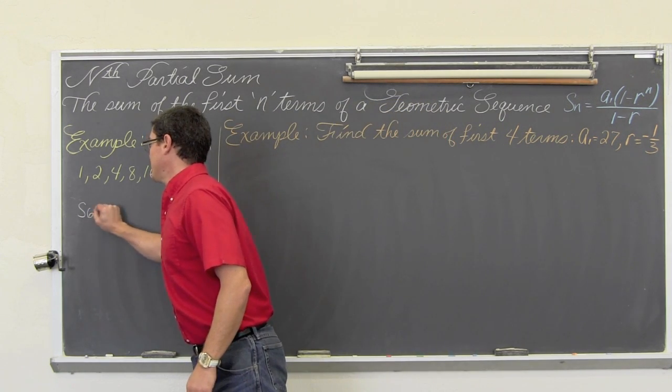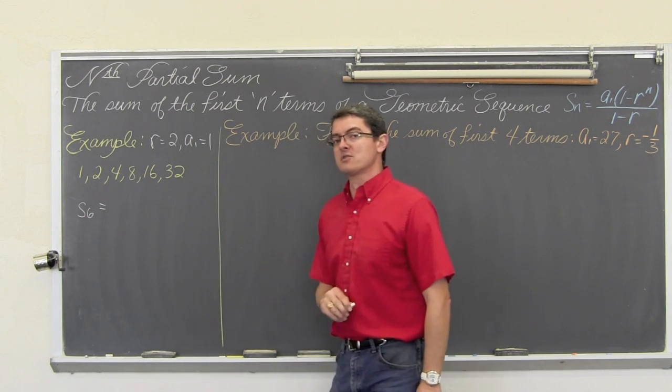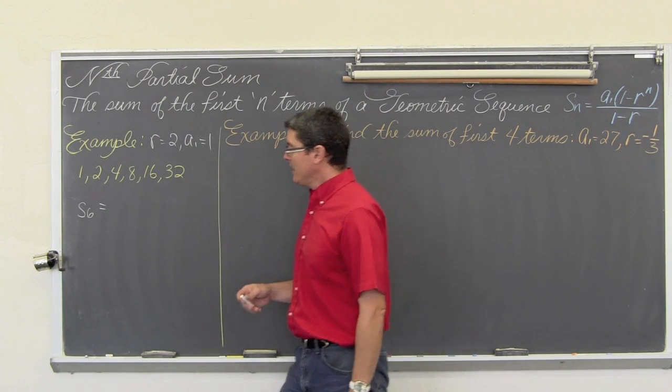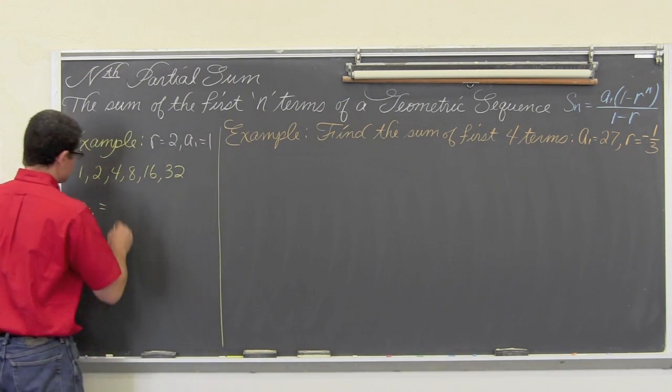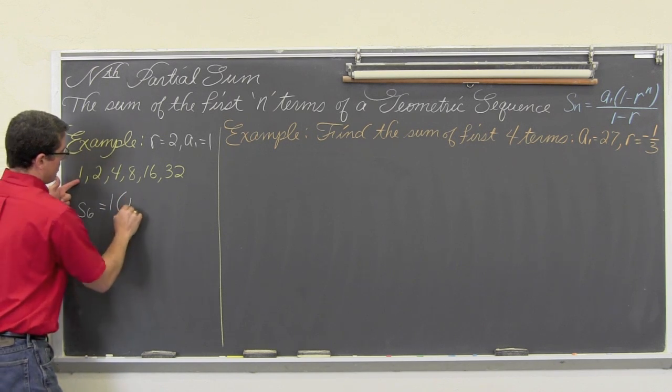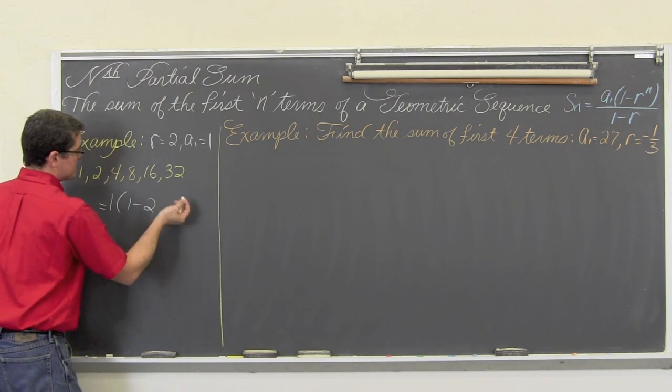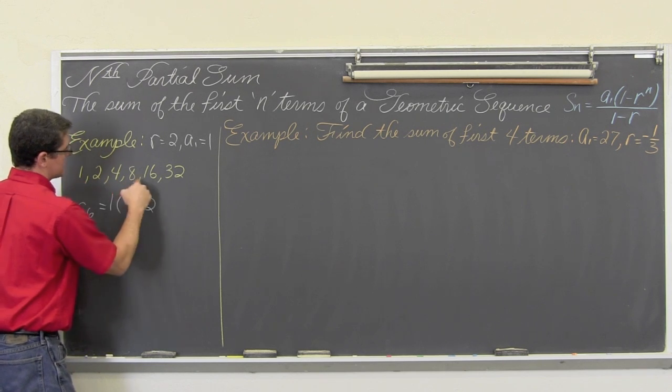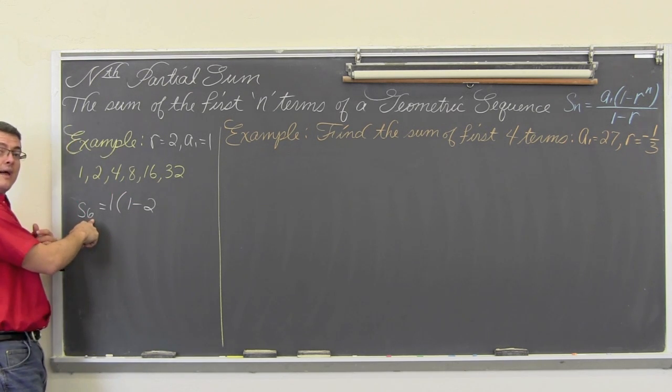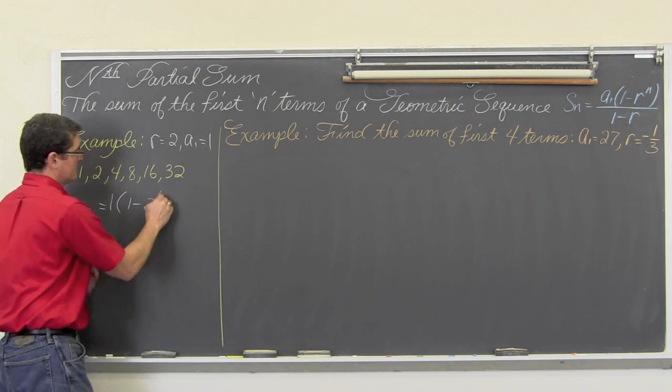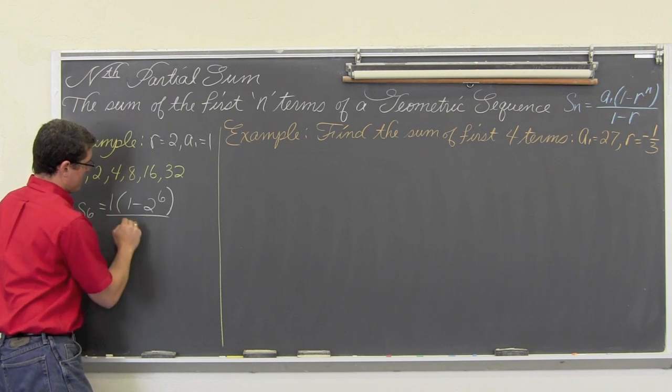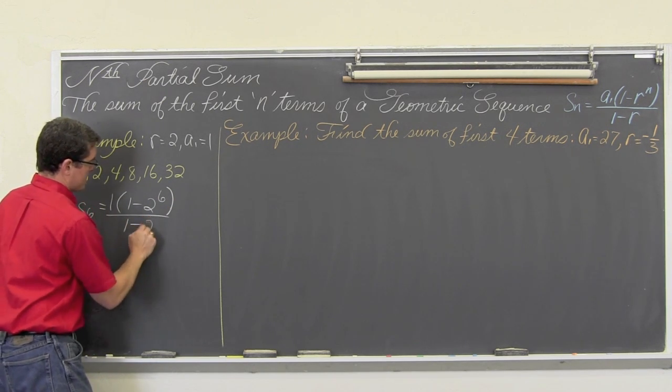So s sub 6, because we are going to find the sum of these first six terms, is equal to a sub 1, which is 1, times 1 minus r, and we have a constant ratio of 2, raised to the n power, and we want to find the sum of the first six terms, so n is equal to 6, over 1 minus r, which again is 2.